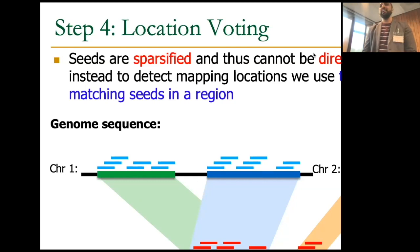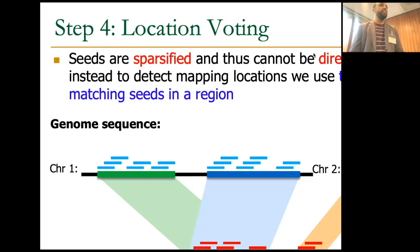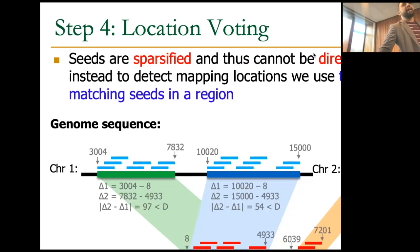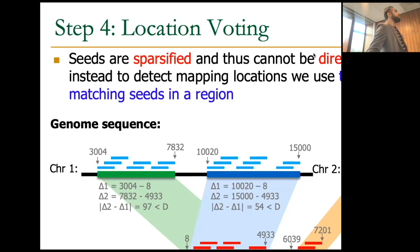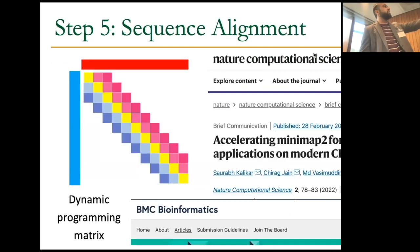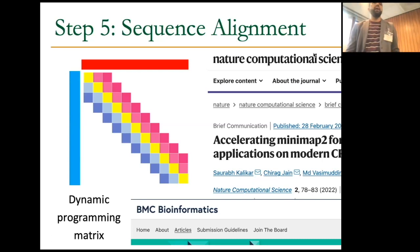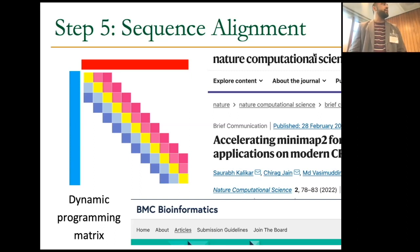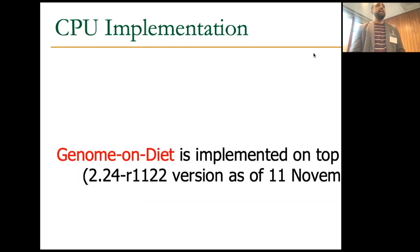Minimap2 is the state-of-the-art read mapper — still the best for long reads. This is how we detect the correct mapping location to solve the chaining issue with sparsified seeds. The last step is sequence alignment, which we adapt from a recent Intel implementation — AVX acceleration of the algorithm by Suzuki and Kasahara. With that, we perform a full read mapper and demonstrate the correctness, accuracy, optimality, and computational benefit of Genome on Diet. It is implemented on top of Minimap2, so if you're familiar with its source code, everything will look very familiar.